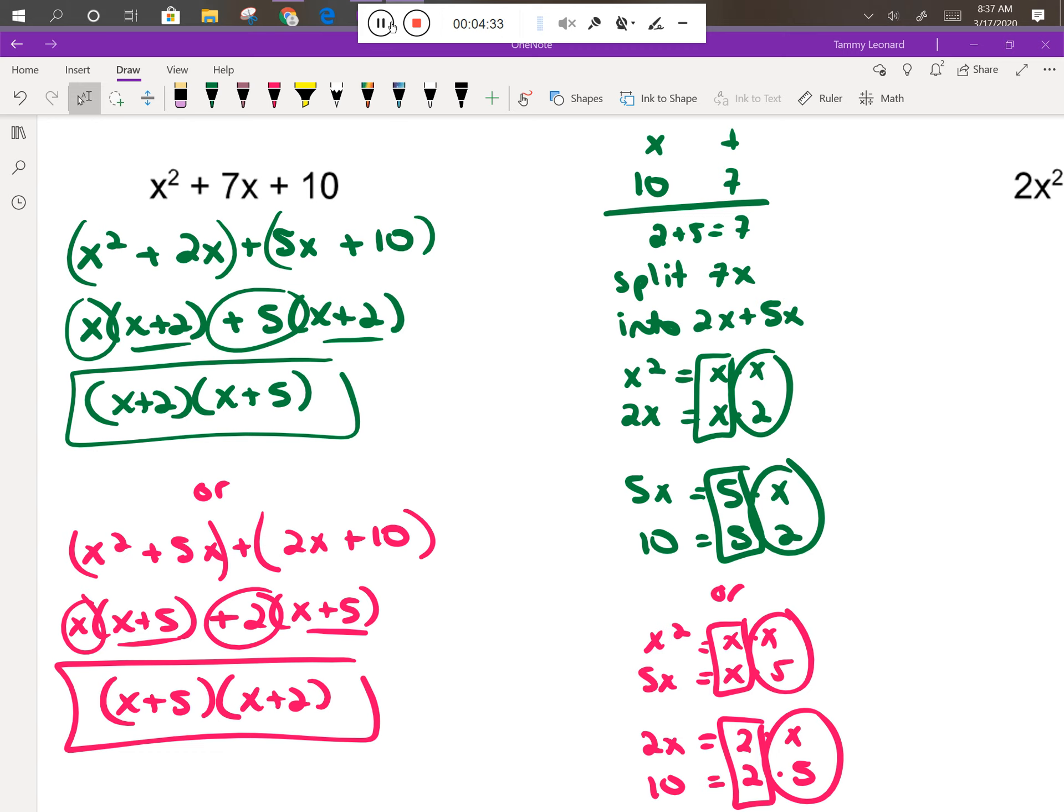Take a look. I did the problem two different ways because I don't know which order you might have thought of the two numbers. If you thought of the two numbers to split the middle term as 2 and 5, then you would have done it the way I did it up in green. If you thought of the two numbers as 5 and 2, then you would have set your work up the way I did it in pink. So just check whichever one matches. Pause if you need to, to go through and check your work.